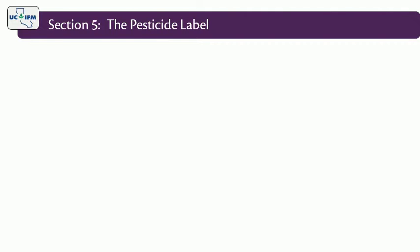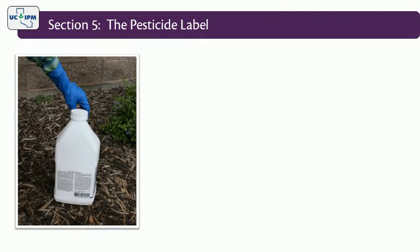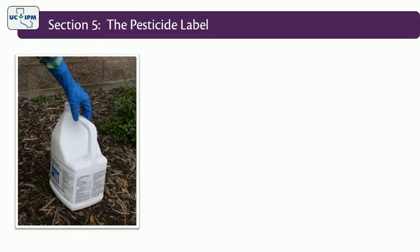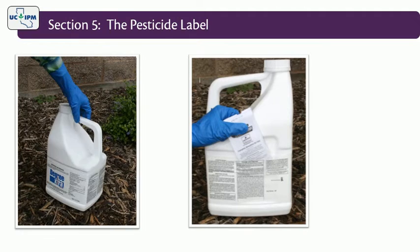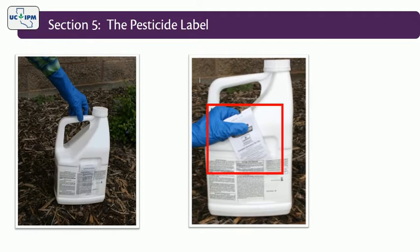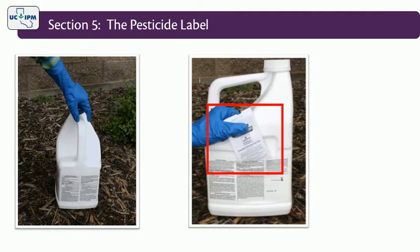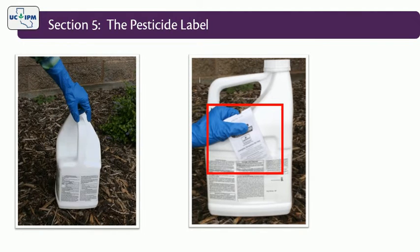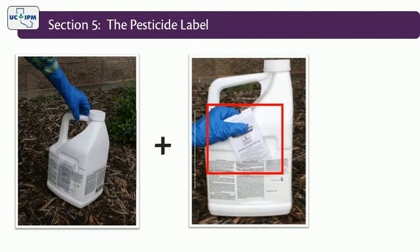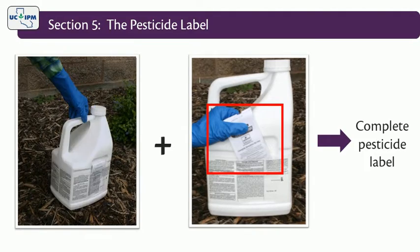In the case of most pesticides, the label is attached to the front or back of the pesticide container. The U.S. Environmental Protection Agency requires manufacturers to attach additional fold-out labels, or booklets, to packages that are too small to have all the required information printed on them. These booklets, together with the part of the label affixed to the container, are the complete pesticide label.